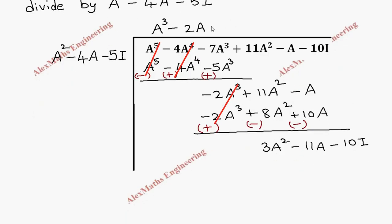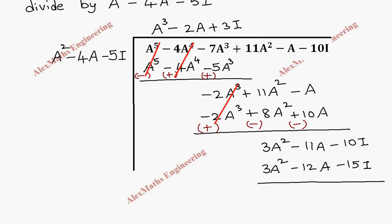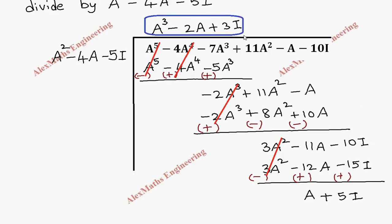To match the first term 3A², I multiply by 3I. So 3I times A² gives 3A². 3I times minus 4A gives minus 12A. 3I times minus 5I gives minus 15I. After subtraction, 3A² terms cancel. Minus 11A plus 12A gives A. Then minus 10I plus 15I gives plus 5I. The remainder is A plus 5I.